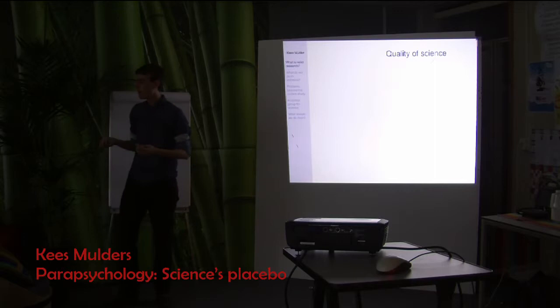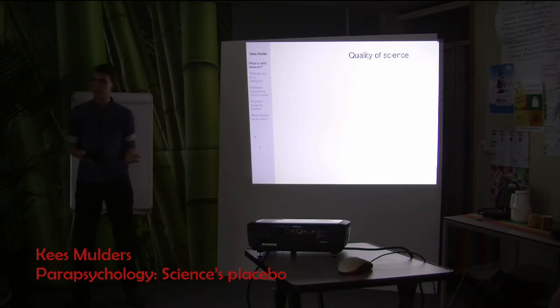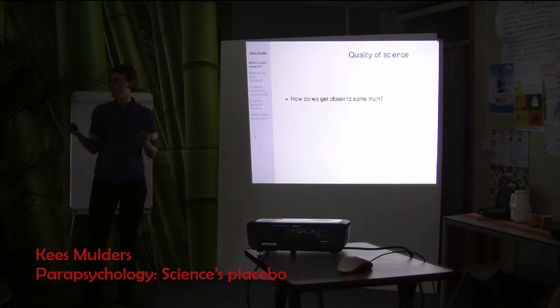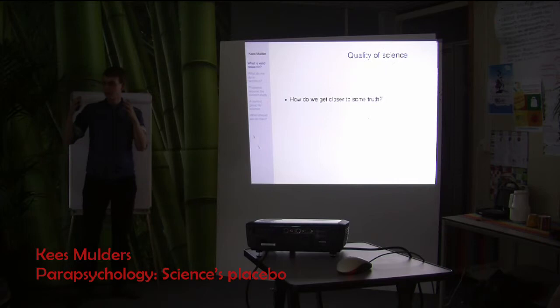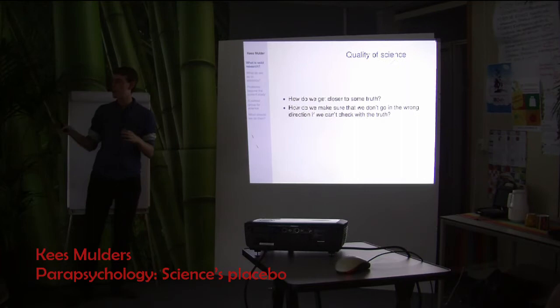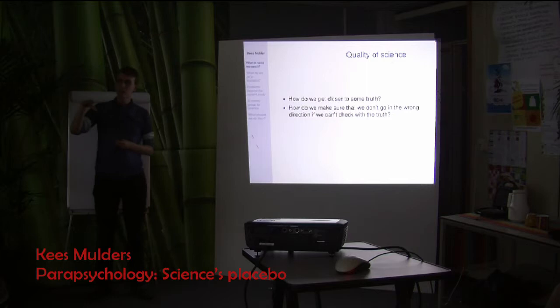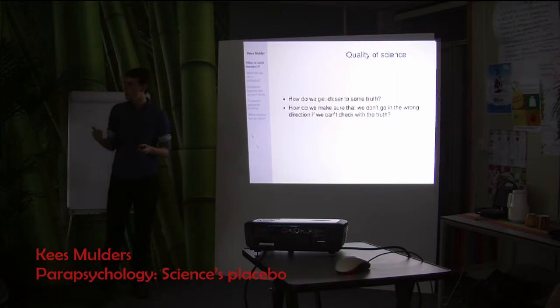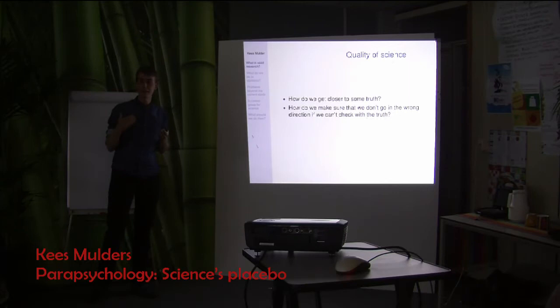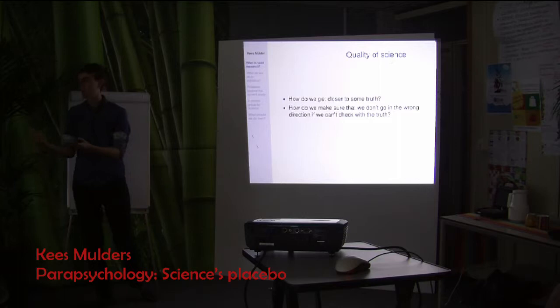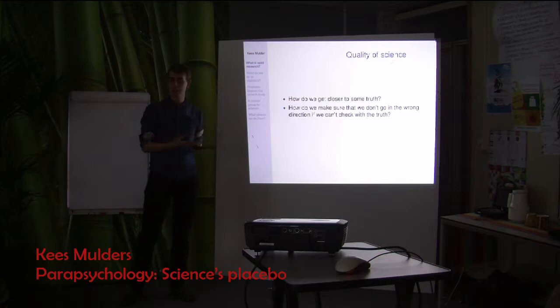How do we know that what we're doing in science is actually useful? In science, we generally try to get closer to some truth — we try to model the world around us and converge. How do we make sure we're not taking a wrong turn? In the end, we would like to apply science and use the knowledge we've gotten to make the world better.